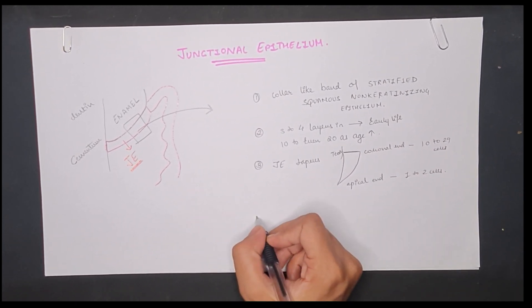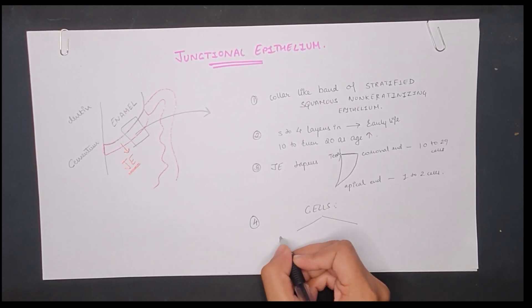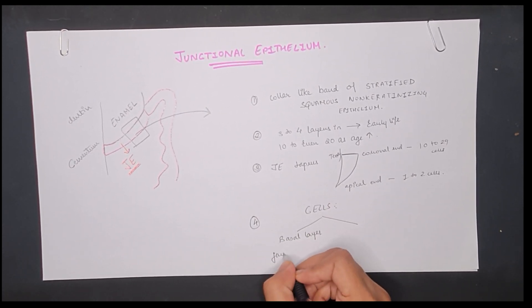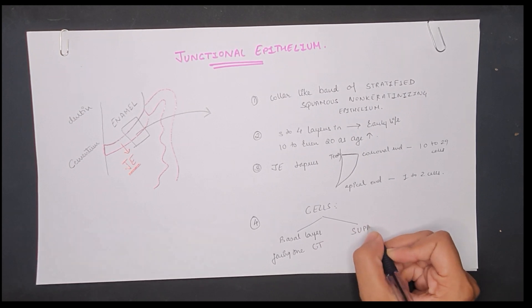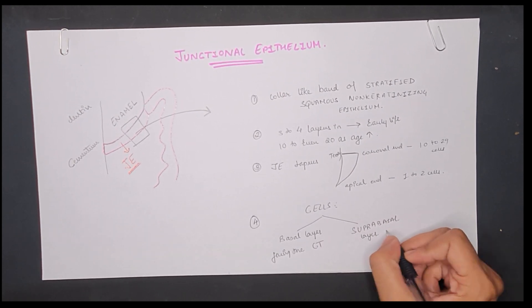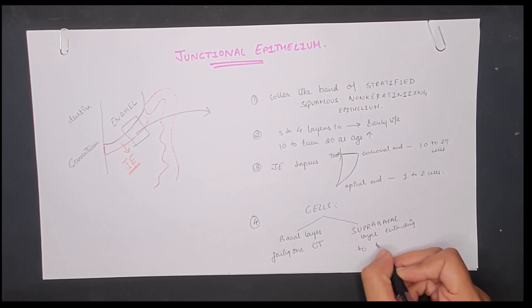These cells of junctional epithelium are divided into two: the basal layer that faces the connective tissue, and the suprabasal layer which faces or extends to the tooth surface.